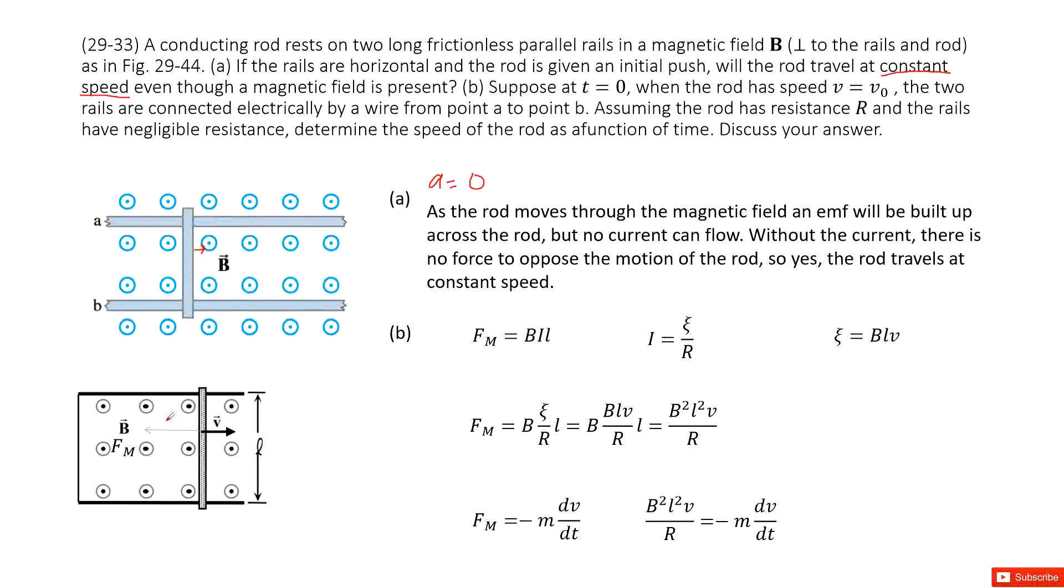How can we decide the induced current in this bar? We can use Lenz's law. As we discussed, the pointing out will increase, so the induced current will generate an induced magnetic field to compensate that.